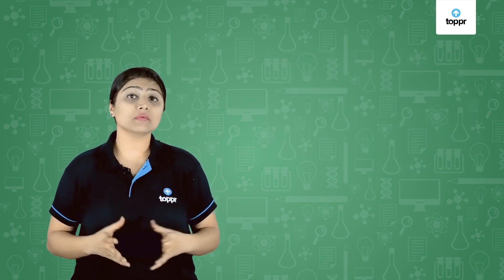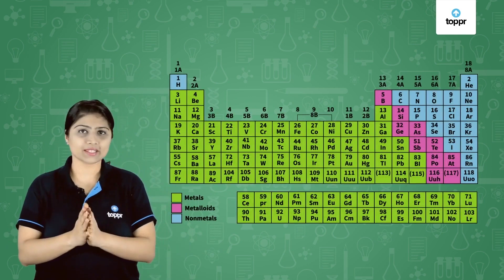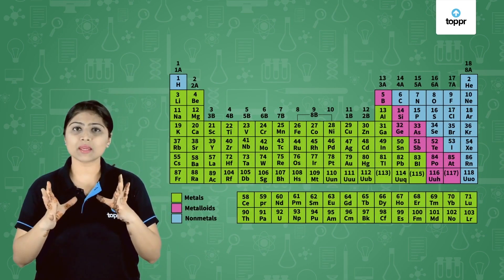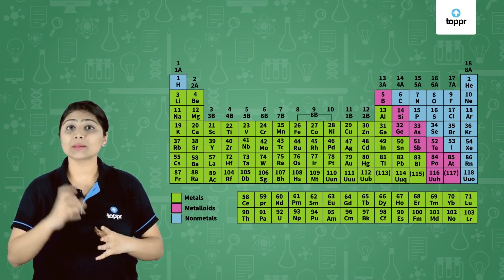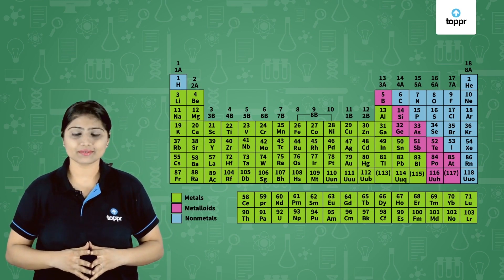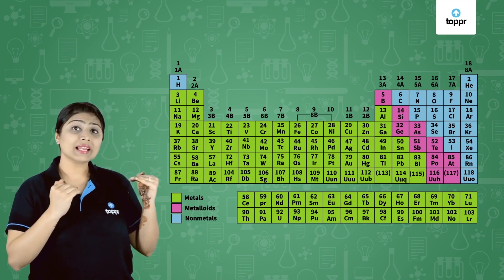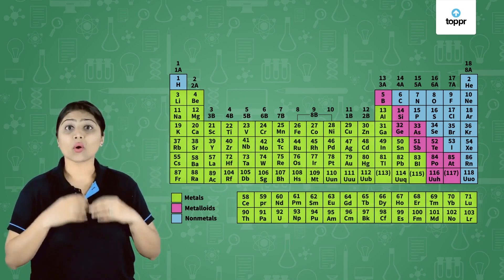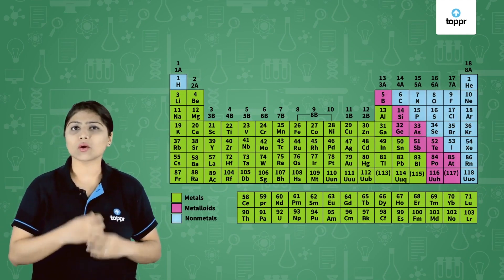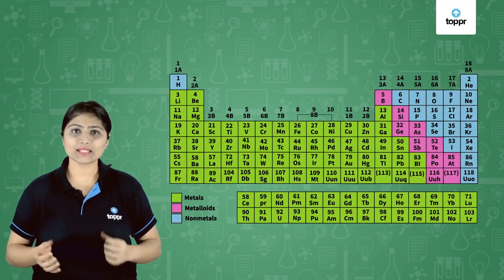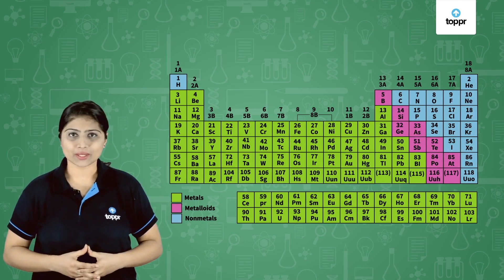Now how many elements do we have around us? We have 118 elements around us and their information is given in this table. Every element is represented by its symbol. The elements that you can see in green are called metals, the elements in blue are called non-metals, and the elements in pink are called metalloids.